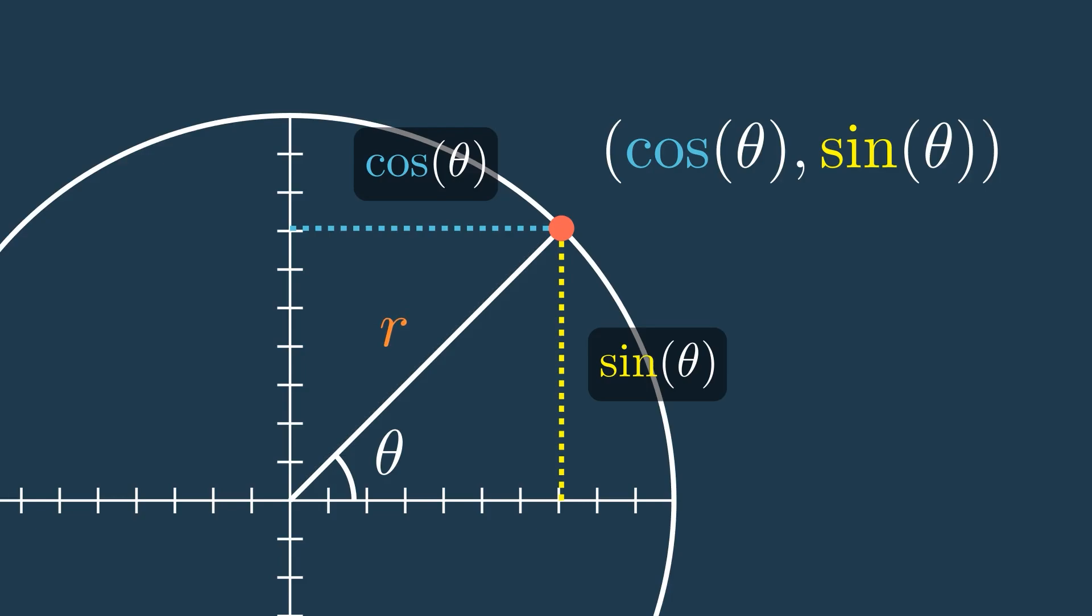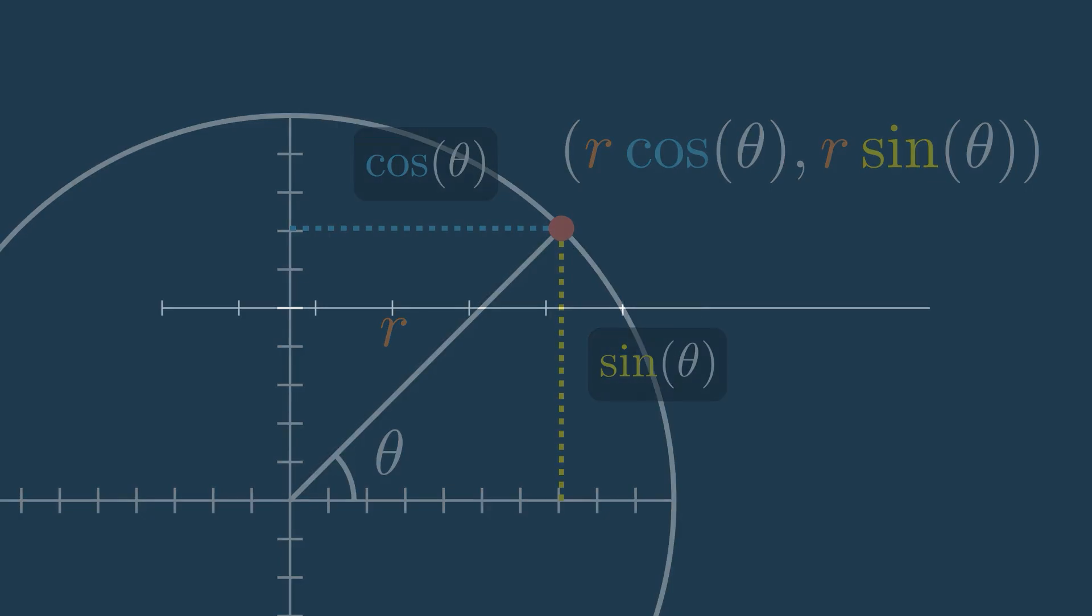More generally, for a line with length r, x is r times the cosine of theta, and y is r times the sine of theta, since we multiply by r on both sides.